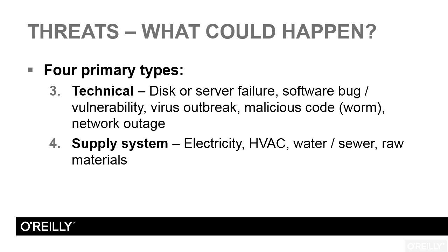The next threat is a technical threat. Technical threats include server failure, a software bug that causes an application to crash so workers can't get to the data, or a crash that causes corruption of the database. Viruses, because they're not targeted per se — they're more of a browsing or grazing type of attack — are called technical attacks. That virus was written by a human, but once the virus is released into the wild, it is autonomous and separate from the human. If a bad guy is writing exploit code and targeting your server, that's a man-made attack — the hacker attack. Other forms of autonomous malicious software code include worms and other forms of malicious code.